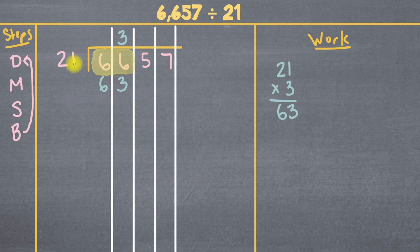So we've already done our division by seeing how many times 21 can go into 66. We did our multiplication to find out how many times. And now what we have to do is subtract. So we'll subtract 66 minus 63. And 6 minus 3 is 3. And the last step is B. And remember, the B stands for bring down. And what we're bringing down is the number in our very next column. So we'll bring down our 5 and place it right next to 3.